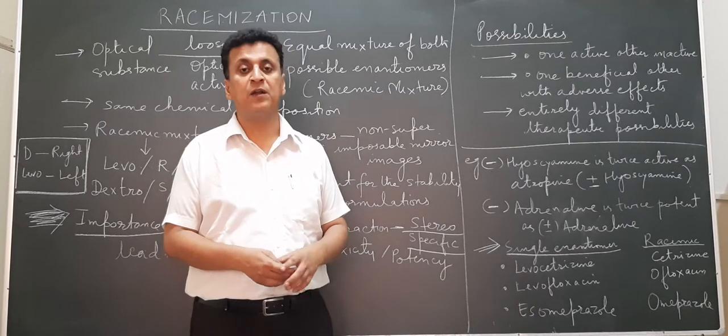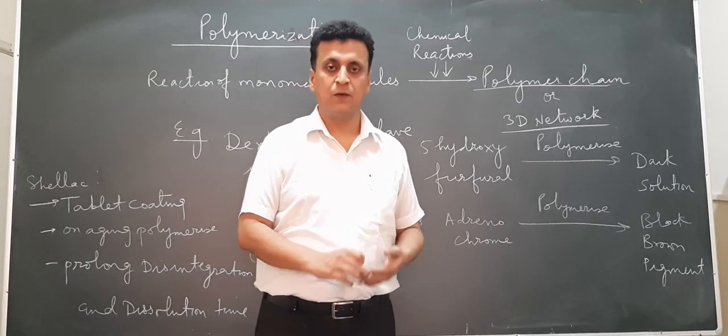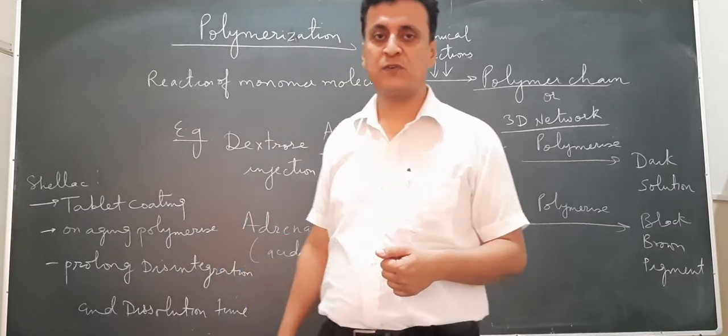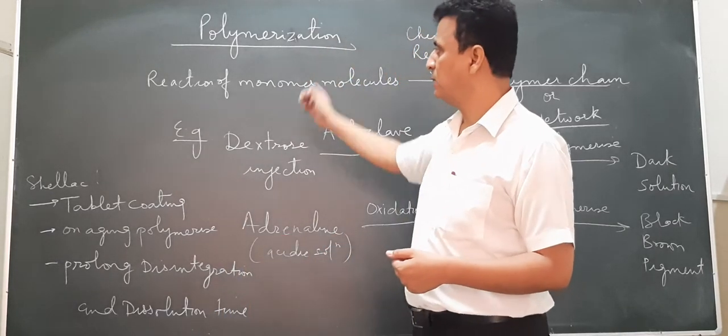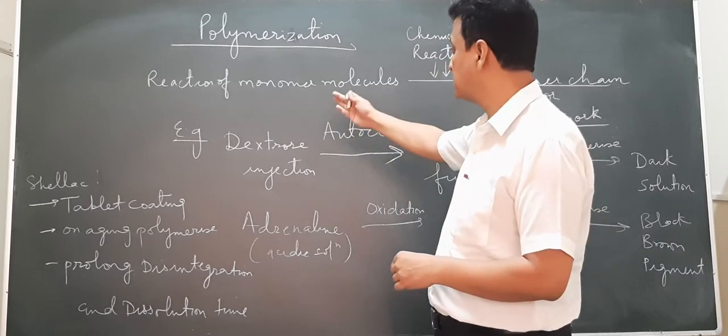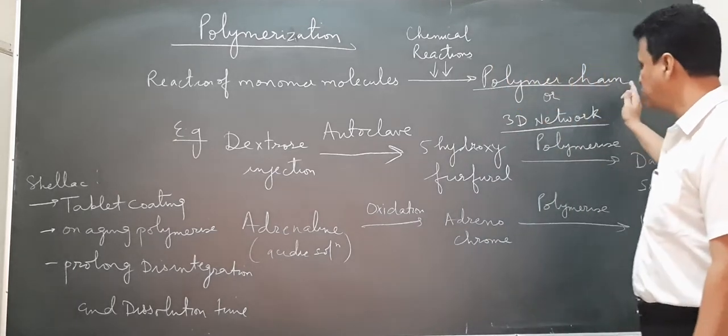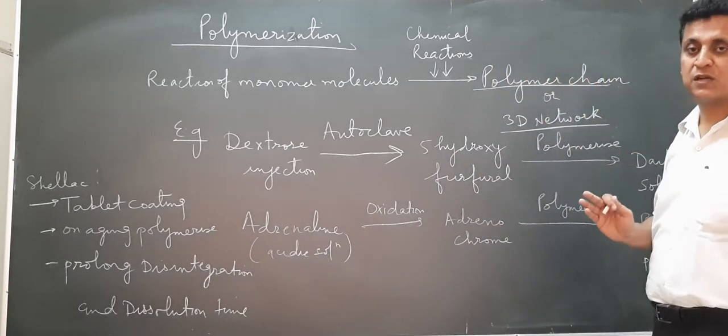Now we will continue with the next topic: polymerization. The next chemical property which we have to study is polymerization. What is polymerization? It is the reaction of monomer molecules during chemical reaction to form a polymer chain or three-dimensional network.